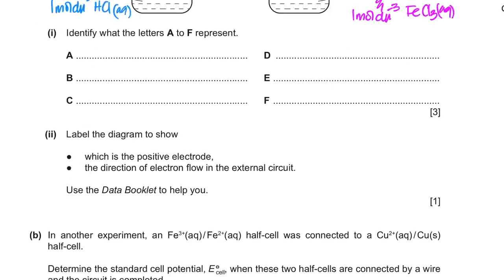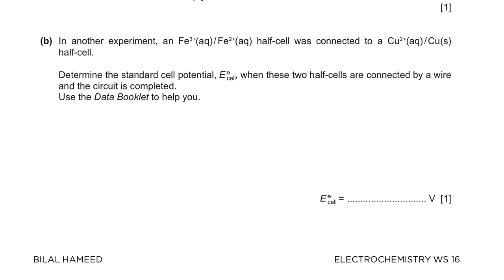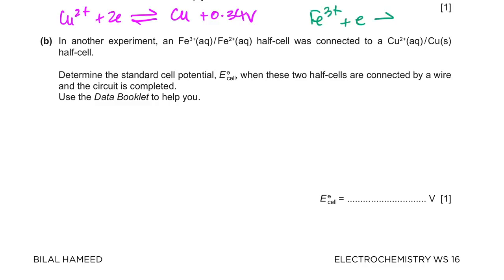Now back to the question: in another experiment, an Fe³⁺/Fe²⁺ cell was connected to a Cu²⁺/Cu cell, and they want to find the cell potential. The two half equations are: Cu²⁺ + 2e⁻ → Cu (E° = +0.34 V) and Fe³⁺ + e⁻ → Fe²⁺ (E° = +0.77 V). Both are positive, so how do we decide which goes forward and which goes backward?